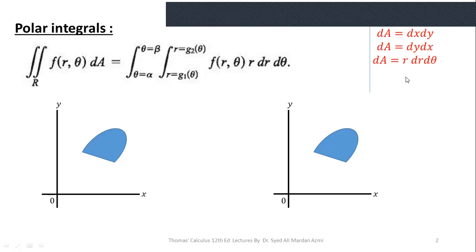From this we can see r is our inner variable and θ is our outer variable. The limits of r may be constant or variable, but the limits of θ are always constant. In the next step we will learn how we can evaluate the limits of r. I have created an example here — from the left side I will explain the limits of r.